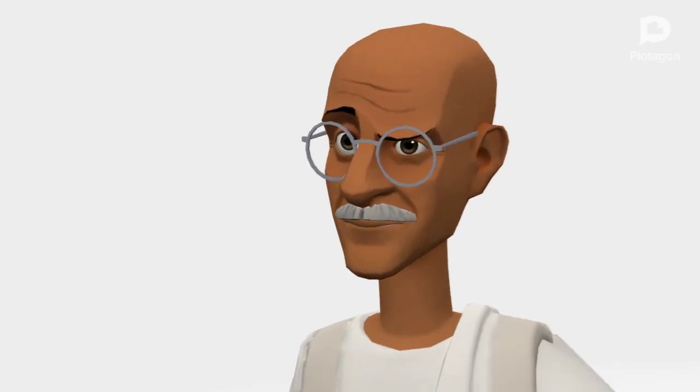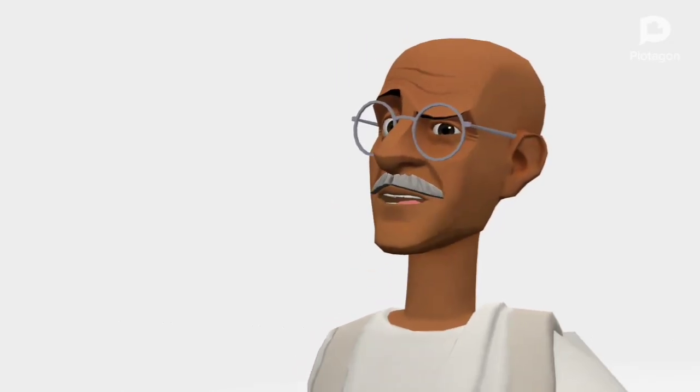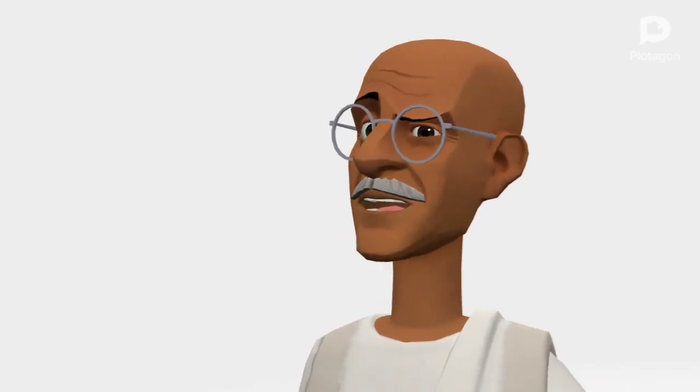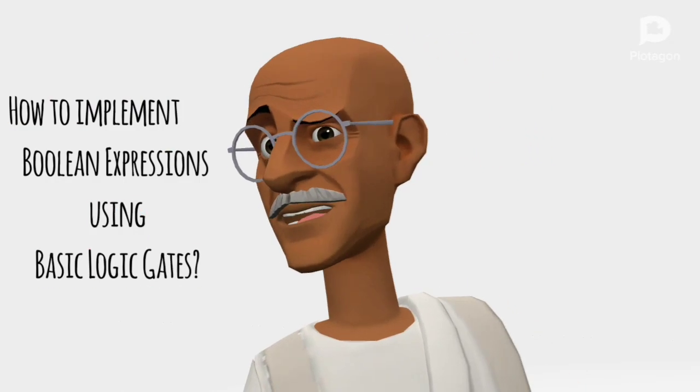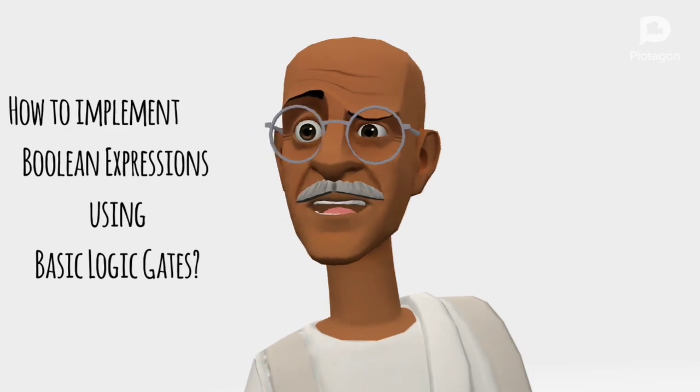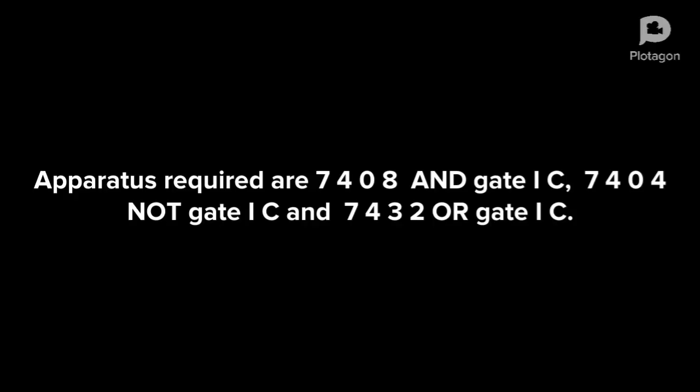Hey guys! Let's learn how to implement boolean expressions using logic gates. Apparatus required are 7408 AND gate IC, 7404 NOT gate IC, and 7432 OR gate IC.